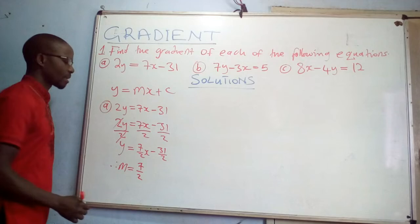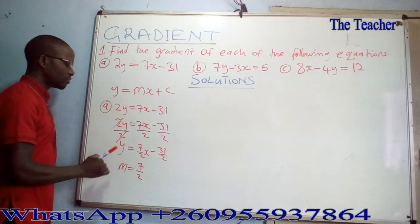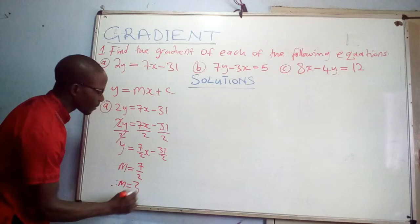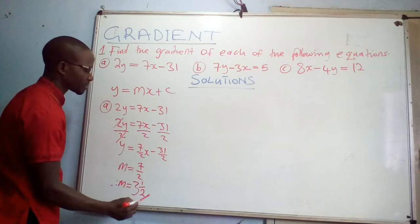You do not leave the final answer as an improper fraction — you convert it to a mixed fraction. So m = 7/2 becomes 3½. Therefore m = 3½. This is the gradient for equation A.